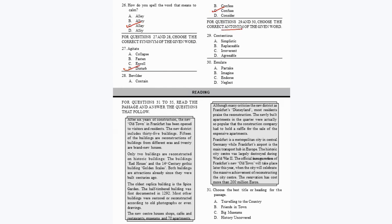For questions 29 and 30, choose the correct antonym. Question 29: 'Contentious' means controversial or causing disagreement. The opposite is 'agreeable' — option D. Question 30: 'Emulate' means to copy or imitate somebody's success. The opposite is 'neglect' — option D. This completes the first section.